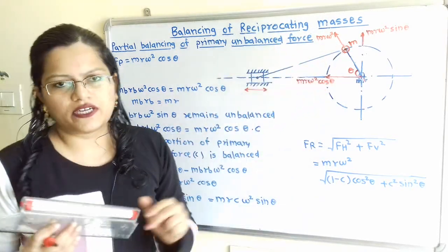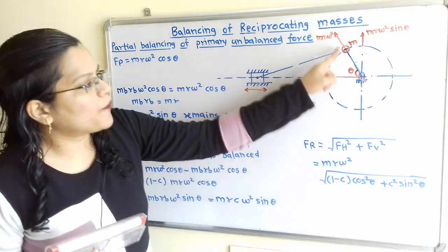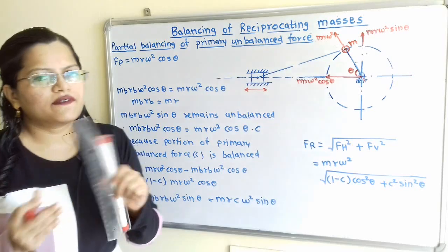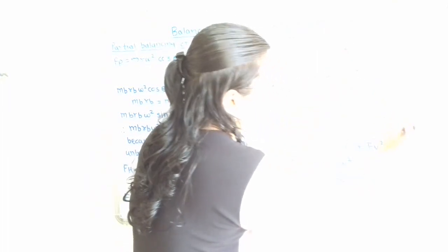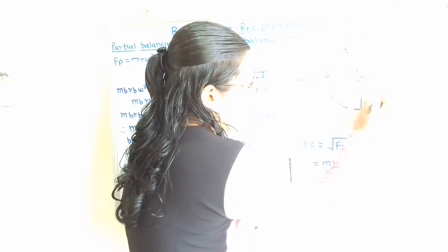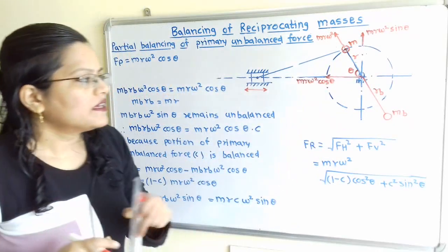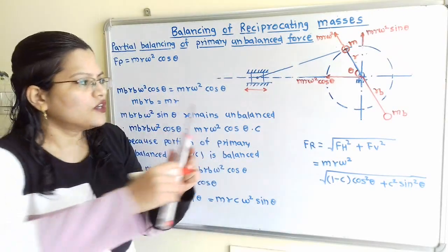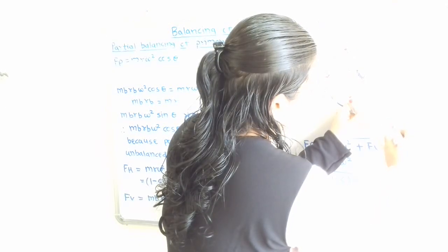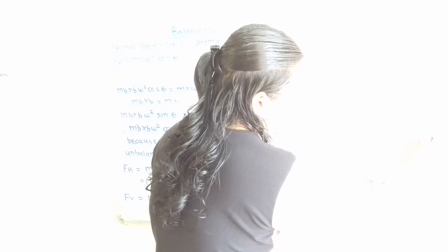Since mass M is rotating, if we place a balancing mass Mb diametrically opposite to M, we can balance it. The balancing mass Mb is placed at radius Rb. This balancing mass also rotates, generating a centrifugal force Mb·Rb·ω² acting radially outward.